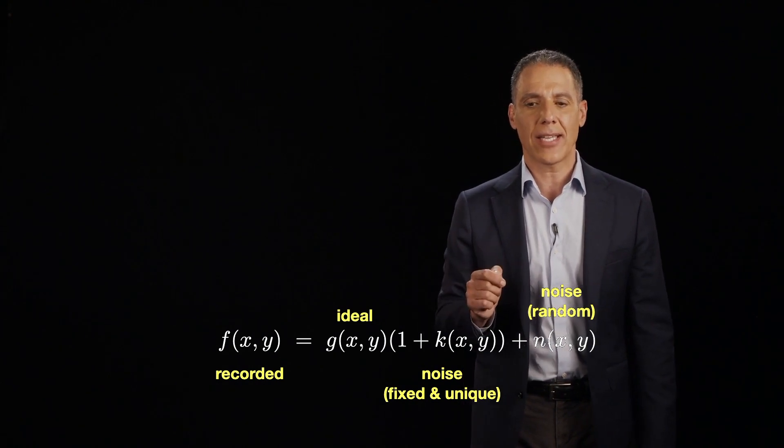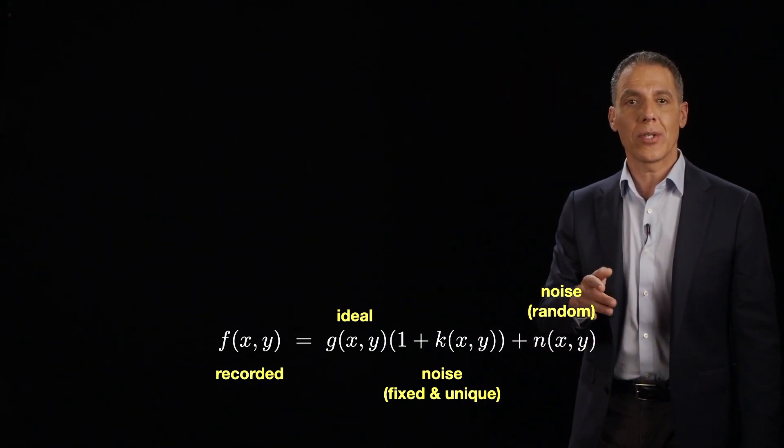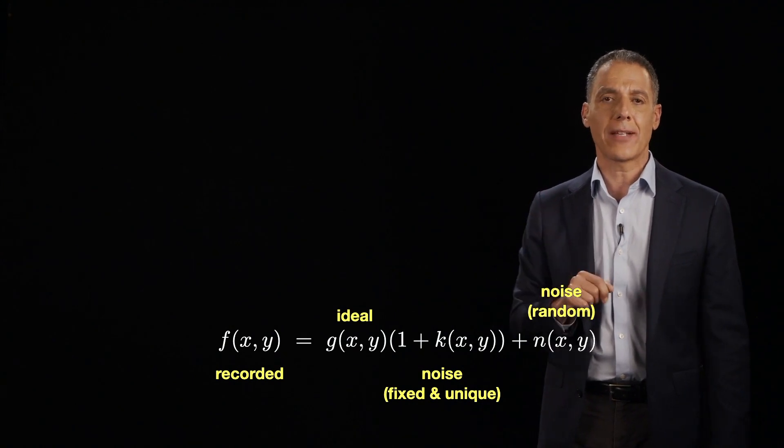Times a fixed and unique noise signal, k(x,y). I'll come back to that in a second. Plus some random amount of noise. There are in fact two noise factors that contribute. A fixed and unique pattern and something that is random.